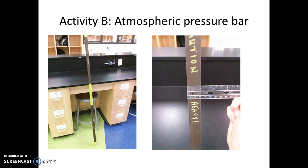If we assume that the bar weighs about 15 pounds and you're balancing that on an area of one square inch, the pressure you're experiencing would be approximately 15 pounds per square inch, which is equivalent to 15 psi. 15 psi is approximately atmospheric pressure. The purpose of Activity B is for you to experience a pressure that's equivalent to atmospheric pressure.